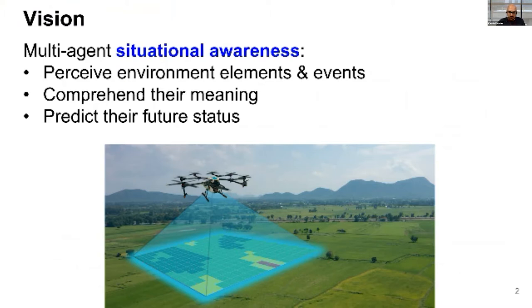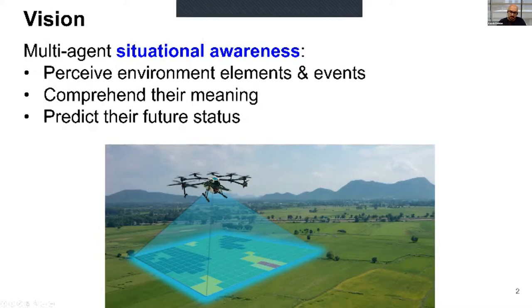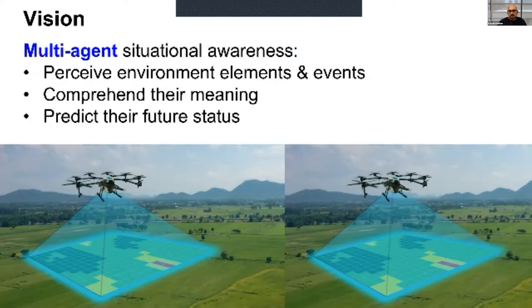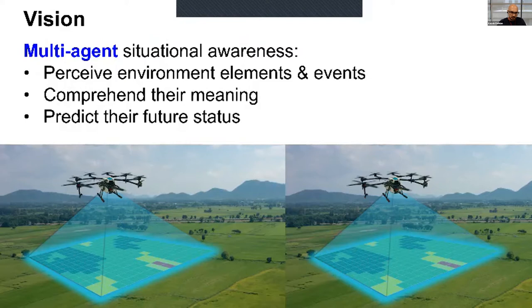Think about this image that you have a drone moving in the environment, mapping it. You want to understand where are the trees, where are the people here, where are the cars, where are they going to be. And the key word here is multi-agent. I want this to be collaboratively done by multiple robots.